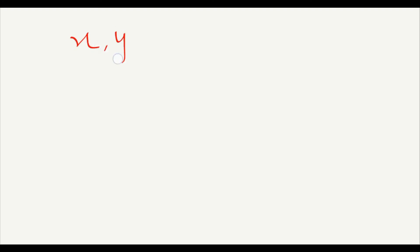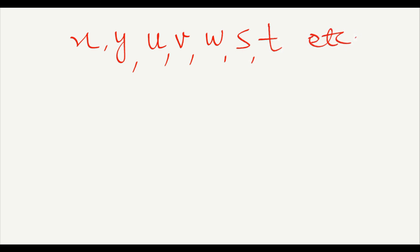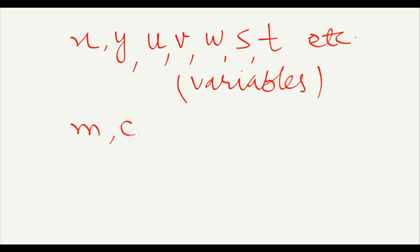You will observe that in most questions the variables used are x, y, u, v, w, s, t, etc. — these are taken as variables. And m, c, etc. are taken as constants. So you will need to observe whether a given letter represents a constant or a variable.